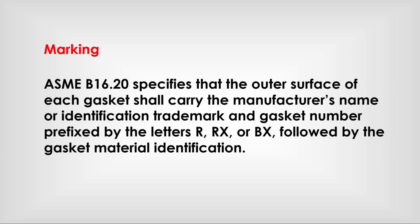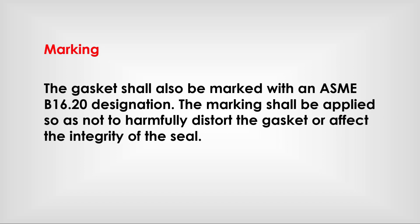Marking: ASME B16.20 specifies that the outer surface of each gasket shall carry the manufacturer's name or identification trademark and the gasket number prefixed by the letters R, RX, or BX, followed by the gasket metal identification. The gaskets shall also be marked with an ASME B16.20 designation. The marking shall be applied so as not to distort the gasket or affect the integrity of the seal.